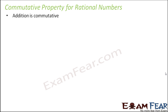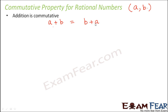When it comes to addition, addition is commutative. That means if you have two rational numbers a and b, if you add a plus b and if you add b plus a, both of these are equal. So even if you change the order of the rational numbers, their sum would remain the same — a plus b is the same as b plus a. That is called the commutative property.